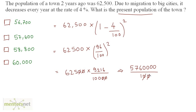These two zeros get cancelled out, so what remains is 57,600. So option B is the correct answer.